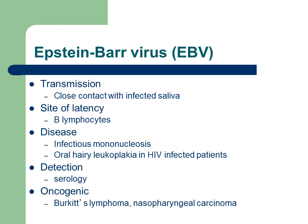Epstein-Barr virus is another one of these herpes viruses. Transmission is through close contact, usually with infected saliva. This virus remains latent in B lymphocytic cells. The diseases it causes include infectious mononucleosis, or mono, and oral hairy leukoplakia in HIV-infected patients. Pretty much everyone by the time they're about 23 or 25 has been infected with Epstein-Barr virus, most without ever having mono or any symptoms. There are strong associations between Epstein-Barr virus and certain cancers, such as Burkitt's lymphoma and nasopharyngeal carcinoma.